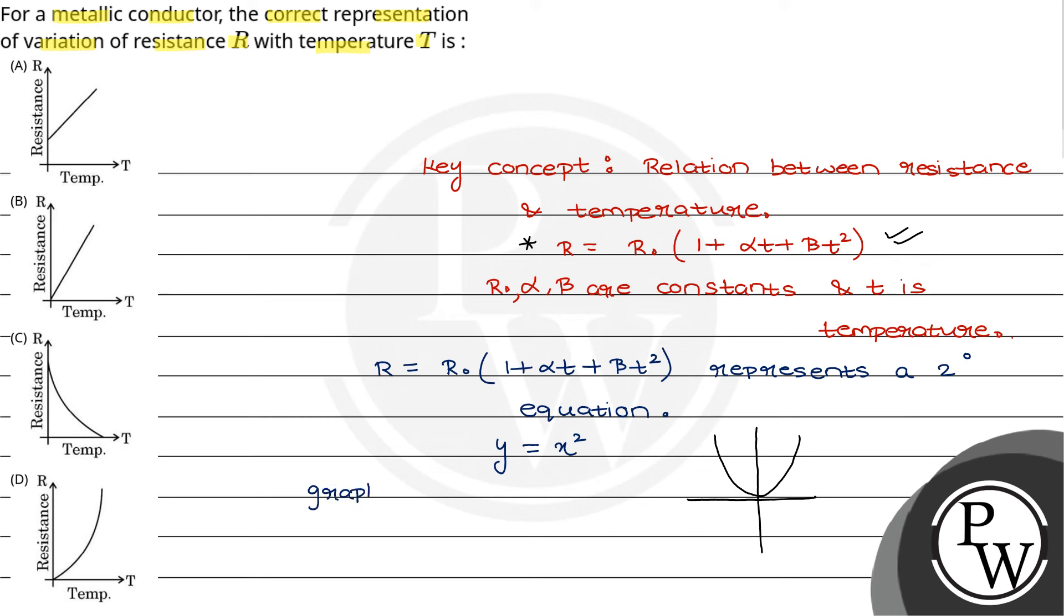So we can write: graph D is the most appropriate graph of R versus T, of R versus T, where R is resistance and T is temperature.